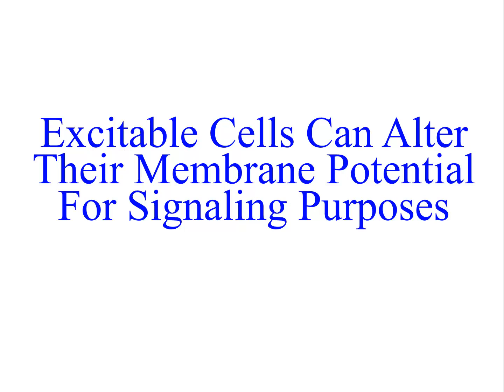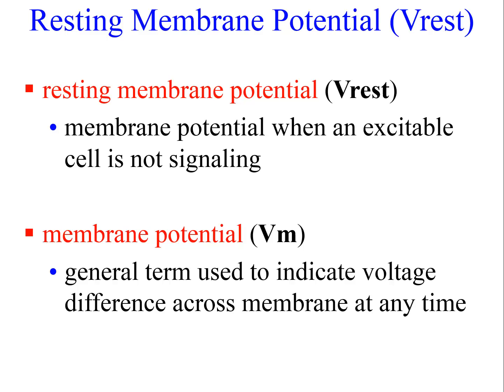Excitable cells are special because they can alter their membrane potential for signaling purposes, meaning the membrane potential can change. It thus becomes important to differentiate between the resting membrane potential (V_rest) — defined as the membrane potential when an excitable cell is not signaling — and the membrane potential (V_M), a more general term indicating the voltage difference across the membrane at any given time.